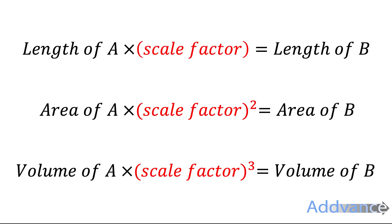We can write out these rules: the length of the smaller shape times the scale factor equals the length of B, the bigger shape. The area of A times the scale factor squared equals the area of B. And the volume of A times the scale factor cubed equals the volume of B. These are the rules we're going to use in today's video. Make note of this before we continue.